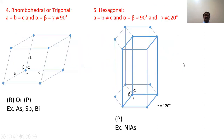In rhombohedral, all sides are equal, and alpha equal to beta equal to gamma, but these angles are not 90 degrees. Only simple rhombohedral is possible, with examples arsenic, antimony, and bismuth.